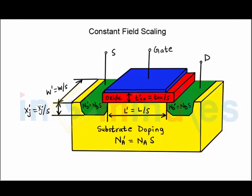If you remember the table, the pictorial diagram is just a representation of what we did in the table. We can see that the doping density increases by a factor of s in order to maintain the charge field relationship.